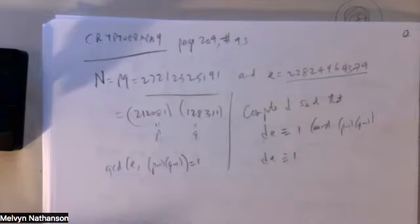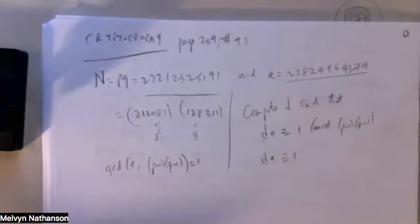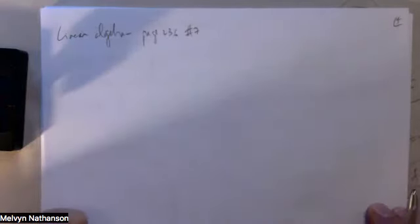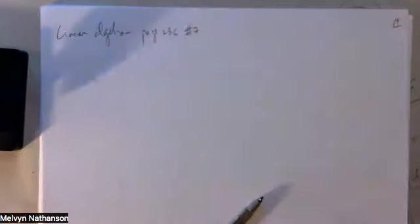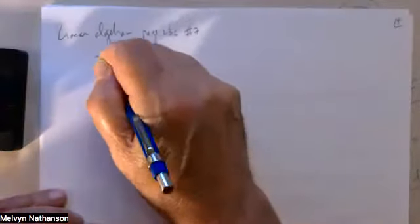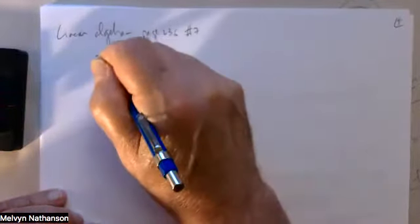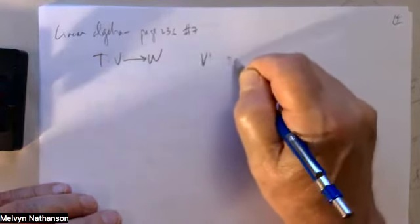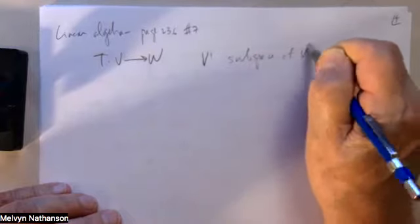On an exam I would never give you a problem like this because you can't do it without a computer. But as a homework problem it's interesting because it forces you to work with moderately big numbers. Now, linear algebra, page 236, problem 7: we have a linear transformation T from V to W, and V prime is a subspace of V.